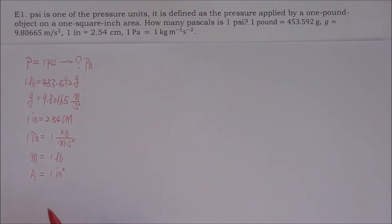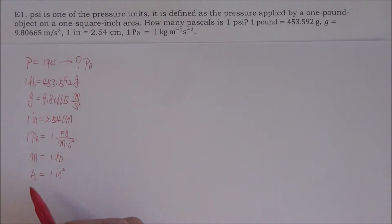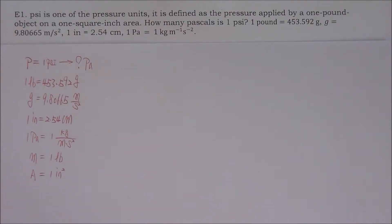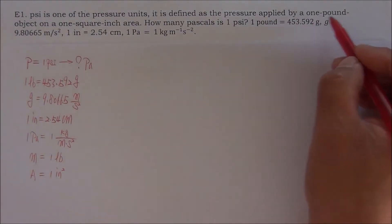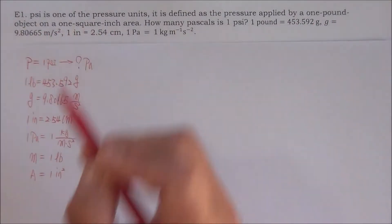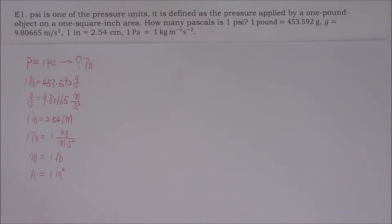The second thing I want you to pay attention to is: I put the mass equal to one pound and the area equal to one inch squared. You may wonder where these two numbers came from. These two numbers are hidden information from the problem — they are given in words: 'one pound,' 'one square inch.' When you are solving a problem, sometimes you need to find the hidden information that is given in words, not in numbers.